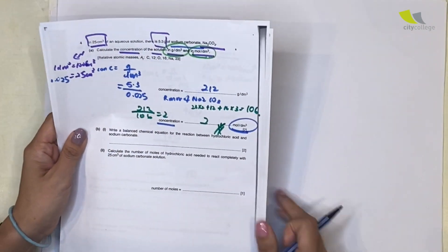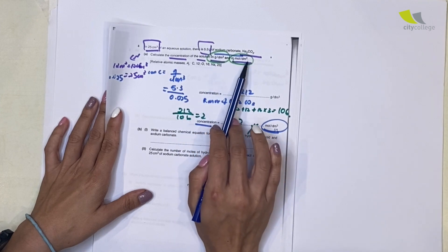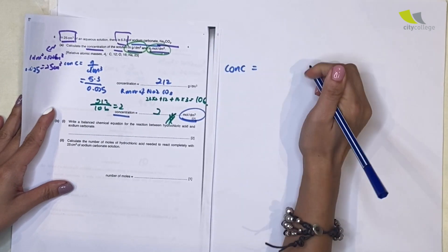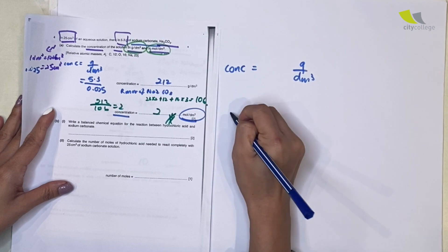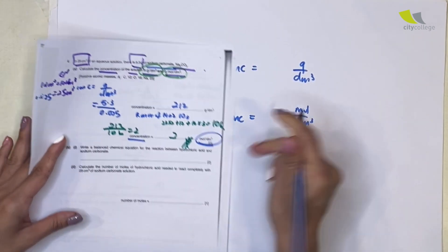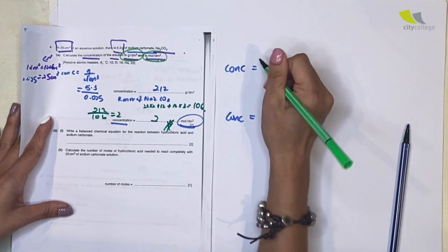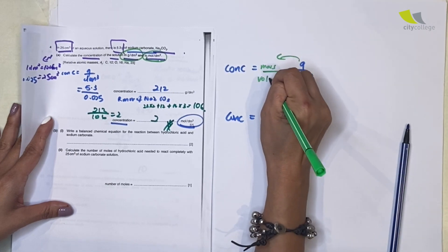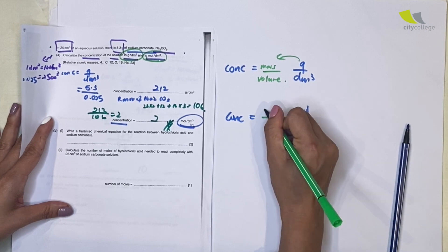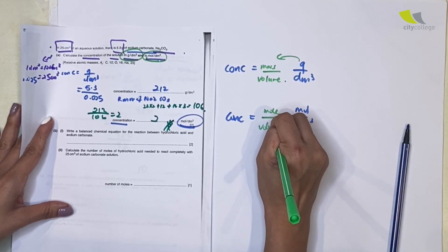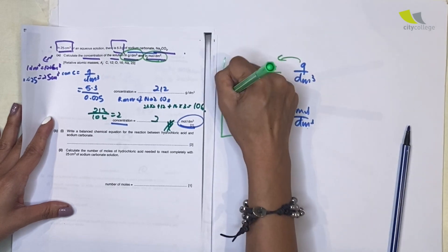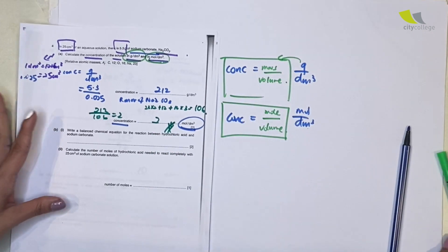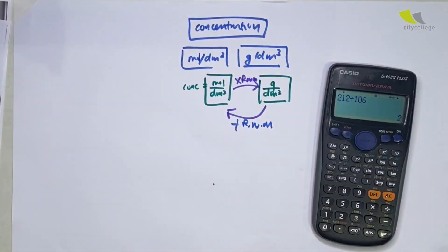By now you should realize that I look at the units to remind myself of the formula for concentration. I write: concentration equals gram over dm³, or concentration equals mole over dm³. But for the actual exam formula — gram reminds you of mass, dm³ reminds you of volume of solution. So make sure you write: concentration = mass/volume, or concentration = mole/volume. This is the actual formula.